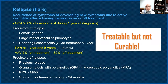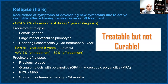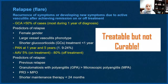Relapse, also called a flare, means recurrence of symptoms or appearance of new symptoms due to active vasculitis after achieving remission. It could happen at any time — a month, two months, a year, or five years after remission — and could occur on or off treatment. Relapses are very common in vasculitides because they are treatable but not yet curable conditions; our treatment does not cure vasculitis.